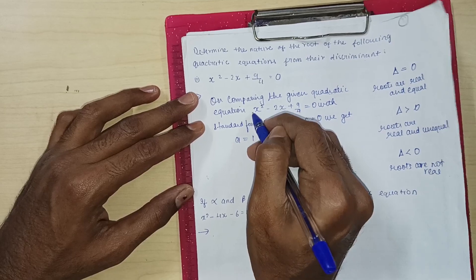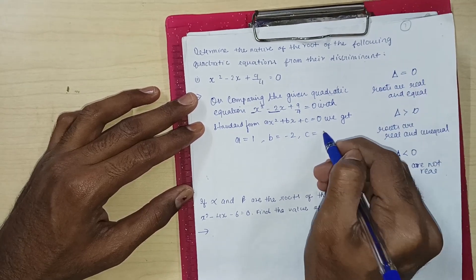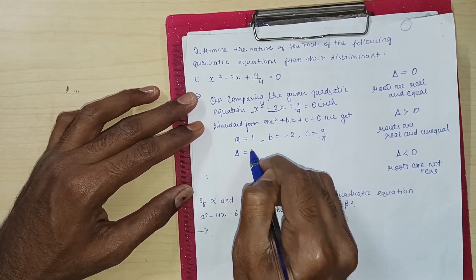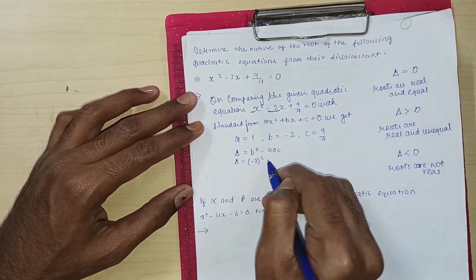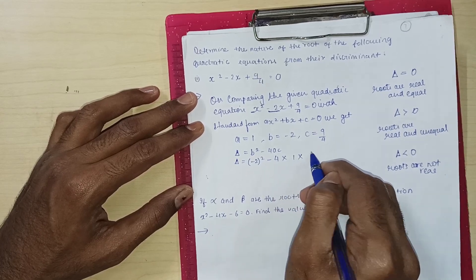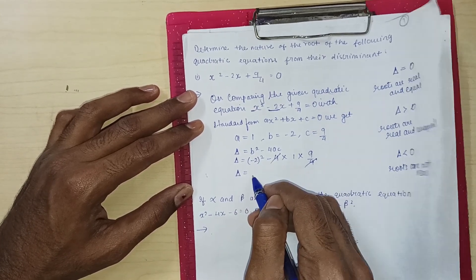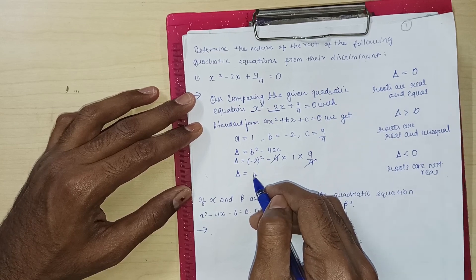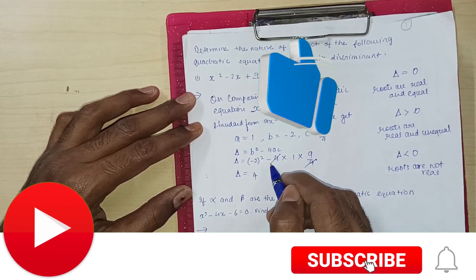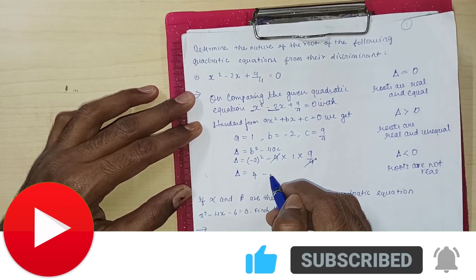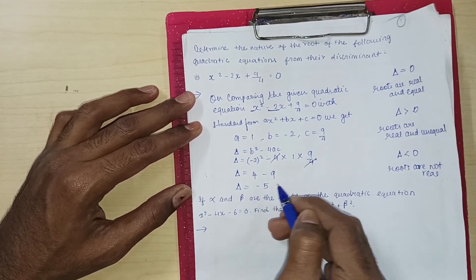a is equal to 1, a is equal to 1, b is equal to minus 2, and c is equal to 9 upon 4. Delta is equal to b square minus 4ac. Delta is equal to, b is minus 2, 9 upon